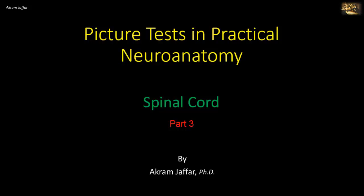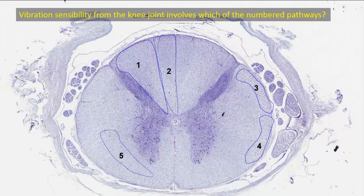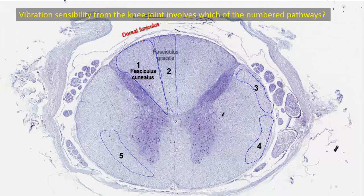Now I will deal with this spinal cord. Vibration sensibility from the knee joint involves which of the numbered pathways? First, let's identify the white matter tracts. One and two are located in the dorsal funiculus. They represent fasciculus cuneatus — number one — which is located on the lateral side of the dorsal funiculus, and fasciculus gracilis, which is located on the medial side. Three is a tract located at the periphery of the lateral funiculus: the dorsal or posterior spinocerebellar tract.